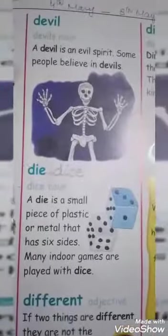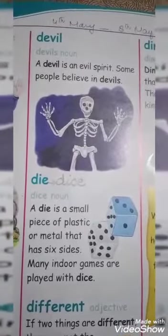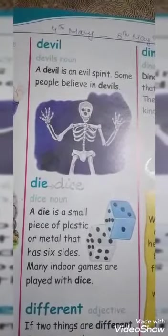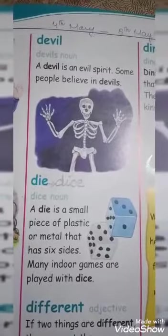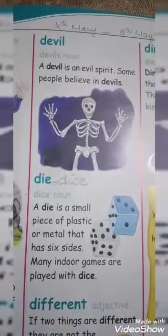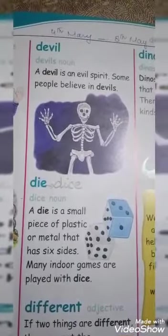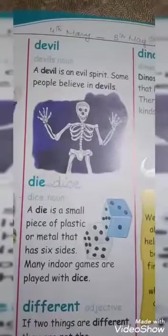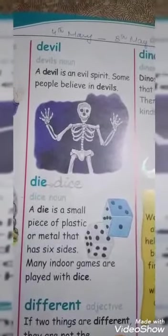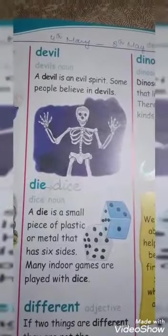The next word is 'dice.' Students, this word is dice. Dice is a small piece of plastic and metal. It has six sides. Many indoor games are played with dice. There are a lot of games that you can play with dice.